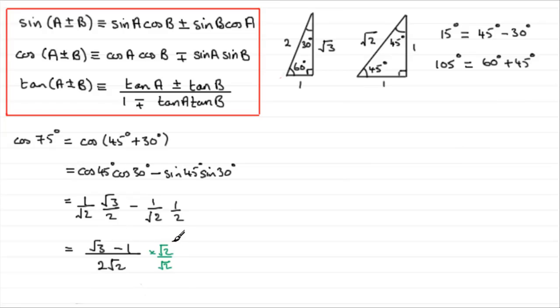But I'm not going to expand it. I'm just going to leave it then as root 2 on the outside of root 3 minus 1, and all of that is divided by 2 root 2 times root 2, which is going to be 4. Okay, so that gives us the exact value of the cosine of 75 degrees.